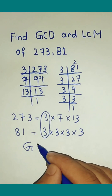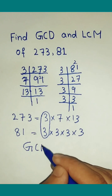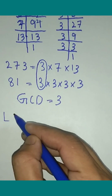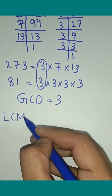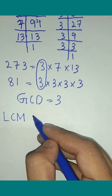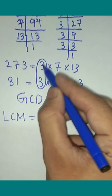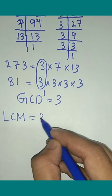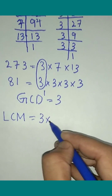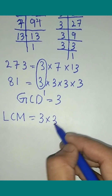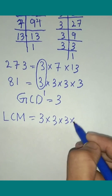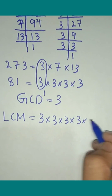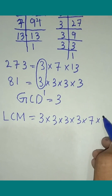The GCD is equal to the common factor, which is 3. Taking all the common elements: 1 x 3 x 3 x 3 x 7 x 13.